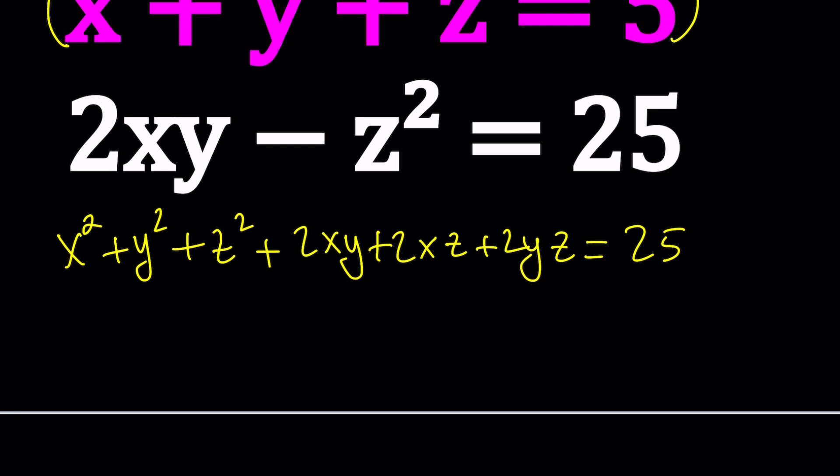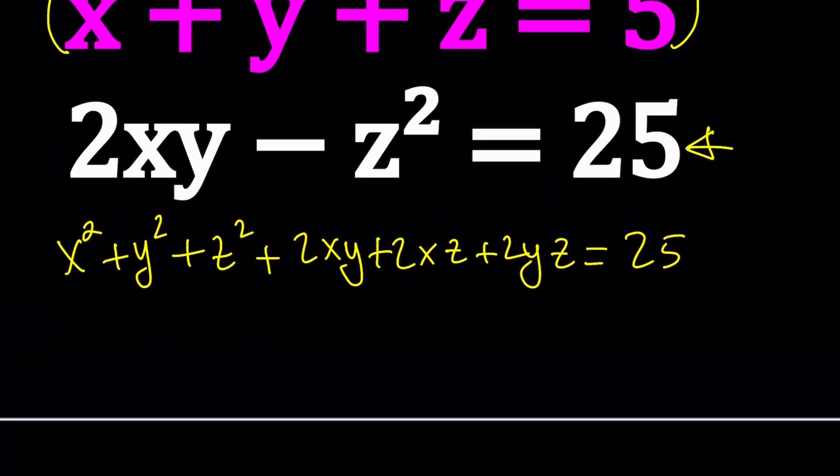Now notice that this is equal to the second equation because the second expression equals 25 as well. So if two things are equal to the same thing, then they're equal. So what I can do is replace the 25 with this one, 2xy minus z squared. Nice. Let's see what happens. Is that going to help us at all? Let's find out.